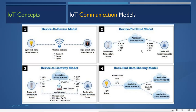In the device-to-cloud model, a device with a temperature sensor sends information to an application service provider via HTTP, TLS, or TCP protocols. A second device, such as a carbon monoxide sensor, retrieves that information from the cloud. The temperature data is stored in the cloud and then accessed by the carbon monoxide sensor device.